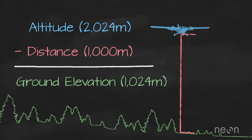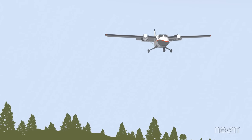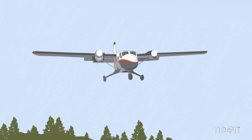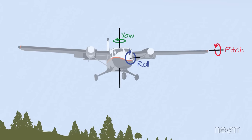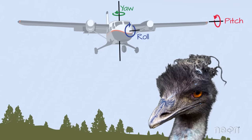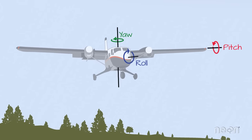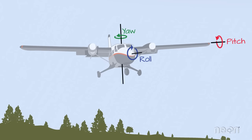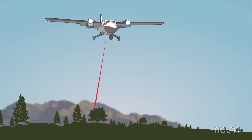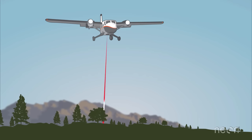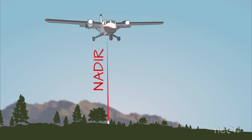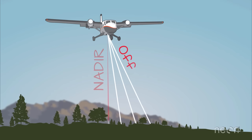There are two more things a LIDAR system must consider when calculating height. First, the plane rocks a bit in the sky due to turbulence. These movements are recorded by the Inertial Measurement Unit, or IMU, so they can be accounted for when height values are calculated for each LIDAR return. Also, an airborne system scans the Earth from side to side, so while some light pulses travel vertically — or directly at nadir — most pulses leave the plane at an angle, or off nadir. The system must also account for pulse angle when it calculates elevation.